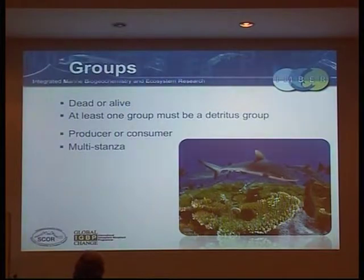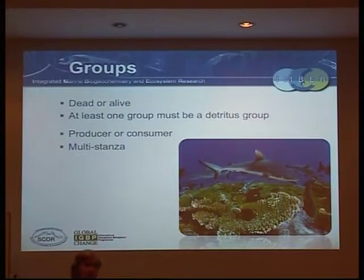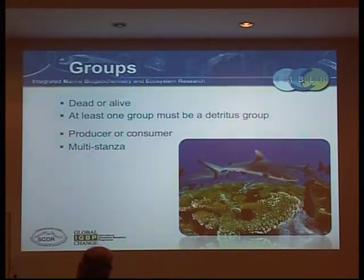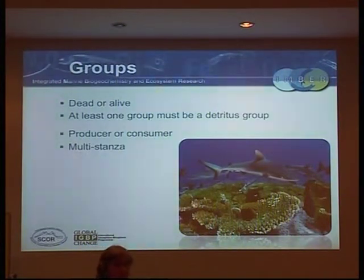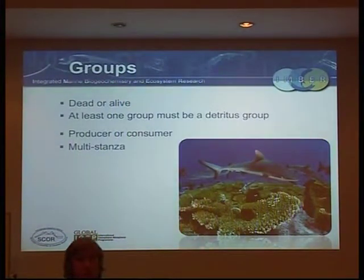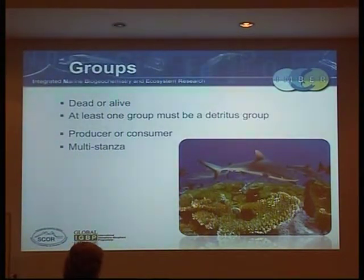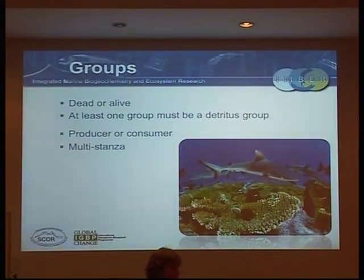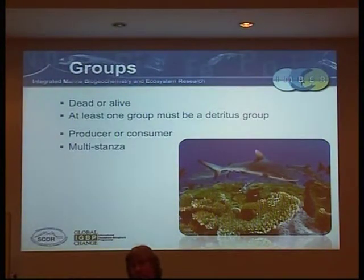When you're defining your groups, you've got to have at least one detritus group, so you've got to define things as dead or alive. Then you've got whether they're a producer or a consumer. If they're a primary producer, are they things like kelp, frowdy, or phytoplankton? Or are they a consumer? The one that usually gets short shrift in Ecopath is bacteria - theoretically you can have bacteria that's partly a producer, partly a consumer.